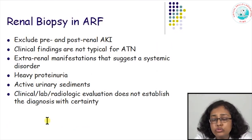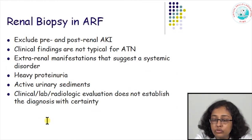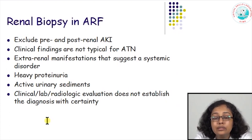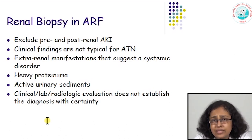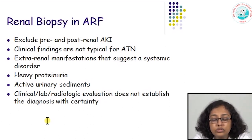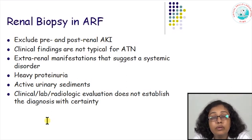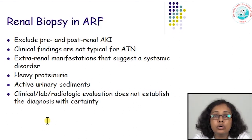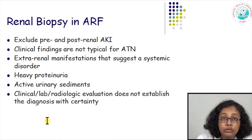Kidney biopsy is not usually done in acute renal failure. It is considered when you need to rule out a post-renal or obstructive cause, there is no correctable pre-renal cause, and clinical findings are not typical of acute tubular injury — since acute tubular injury is a clinical diagnosis and does not require a kidney biopsy. However, if a patient has heavy proteinuria, abnormal urinary sediments, extra-renal manifestations suggesting systemic disease, or the clinical and lab picture does not fit, a kidney biopsy is better to rule out glomerular diseases.